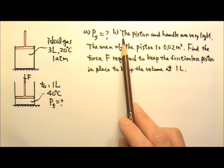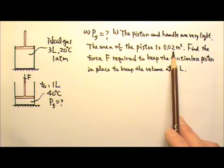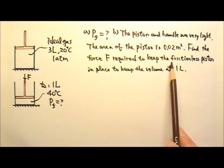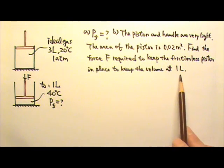Part B: The piston and handle are very light. The area of the piston is 0.02 meters squared. Find the force F required to keep the frictionless piston in place to keep the volume at 1 liter.